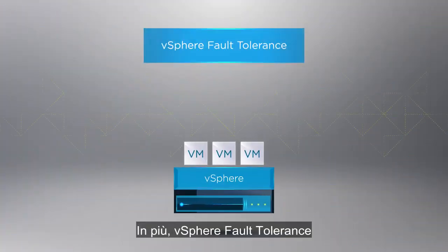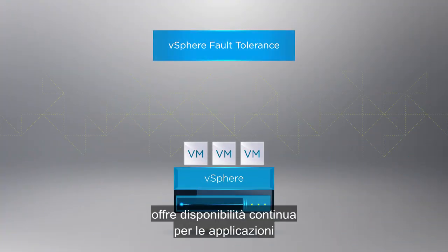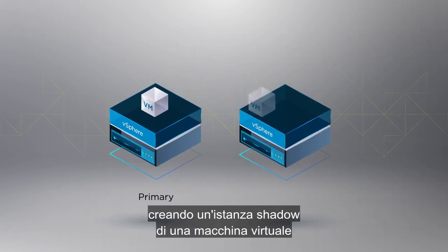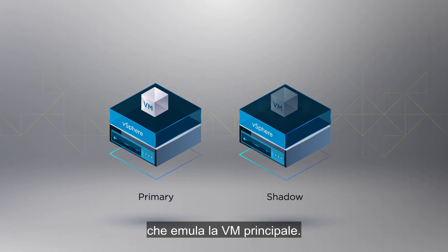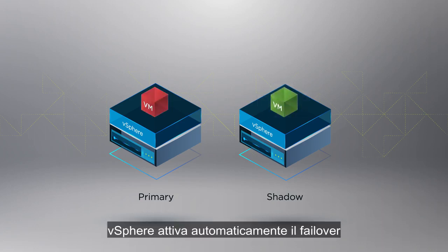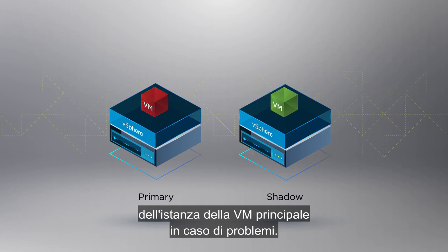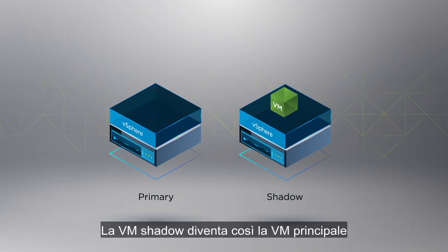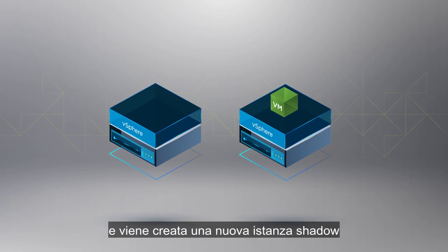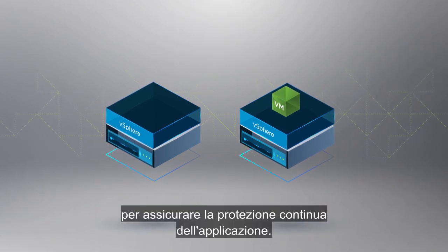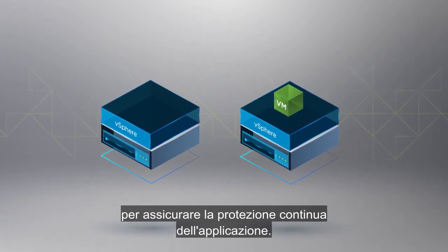Moreover, vSphere Fault Tolerance delivers continuous availability for applications by creating a shadow instance of a virtual machine that is in lock-step with the primary VM. vSphere automatically triggers failover of the primary VM instance should anything happen to it. The shadow VM now becomes the primary VM and a new shadow instance is created, ensuring continuous protection of the application.